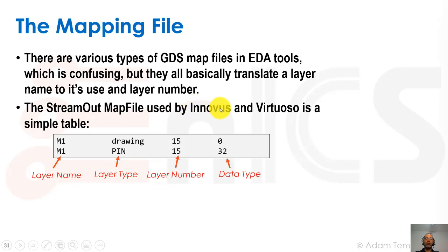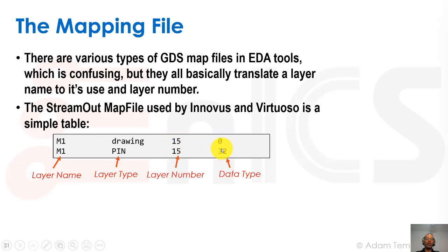The streamout map file used by both Innovus and Virtuoso is a simple table. The first column is the layer name, for example metal1. The second is the type — is it a drawing layer, a pin layer? There are many other types of layers defined inside a GDS. Then the layer number inside the GDS and the data type layer. Often these are referred to as 15:0 and 15:32, but other tools may use different layer numbers. Calibre uses just one number to describe both the layer number and data type, mapping it to metal1 drawing or metal1 pin, etc.